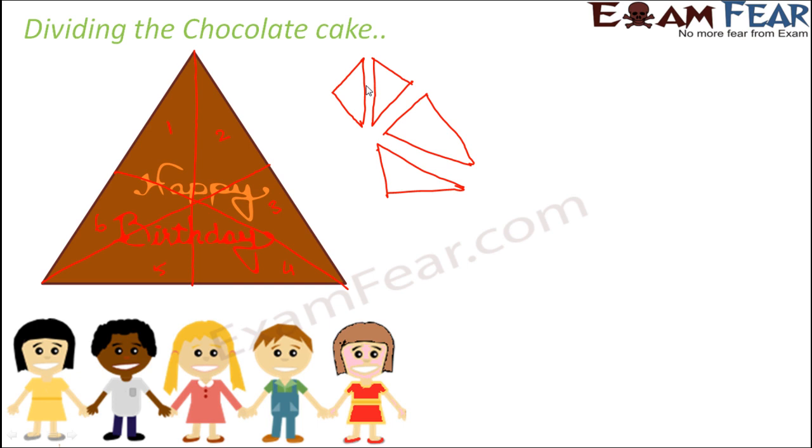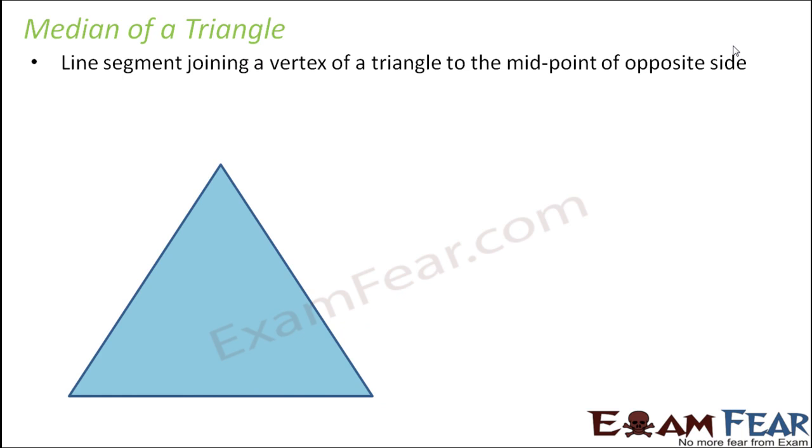These lines are nothing but medians. So they are called medians and we are going to discuss medians here. So what exactly is a median? It is a line segment joining a vertex of a triangle to the midpoint of opposite side. Let's say this is a triangle ABC.